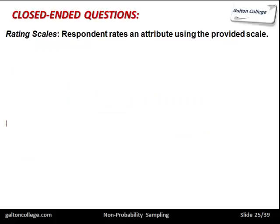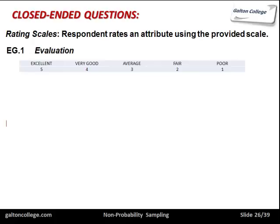Rating scales are used quite a lot when dealing with attitudes. If we're trying to assess people's attitudes towards something, we could use rating scales — for example, trying to evaluate something: is it good, very good, average, excellent, or poor? So you have a scale from one to five and the person is asked to rate a certain situation. This here is called a five-point scale.